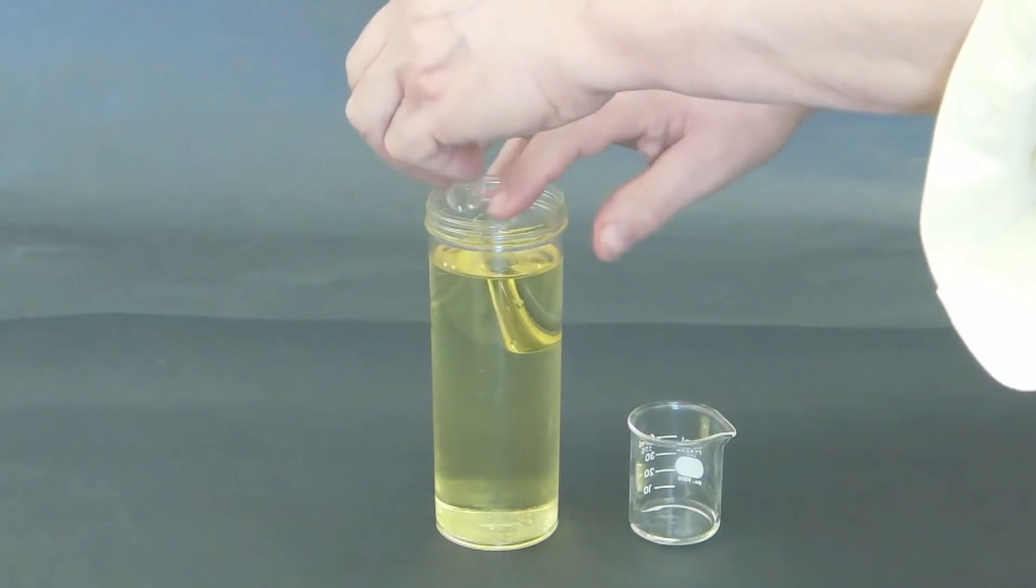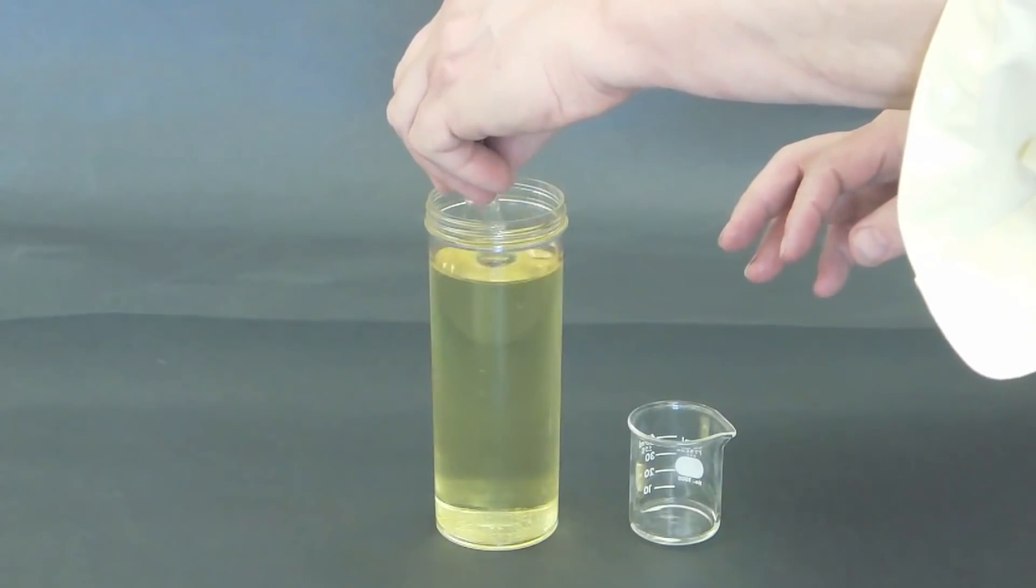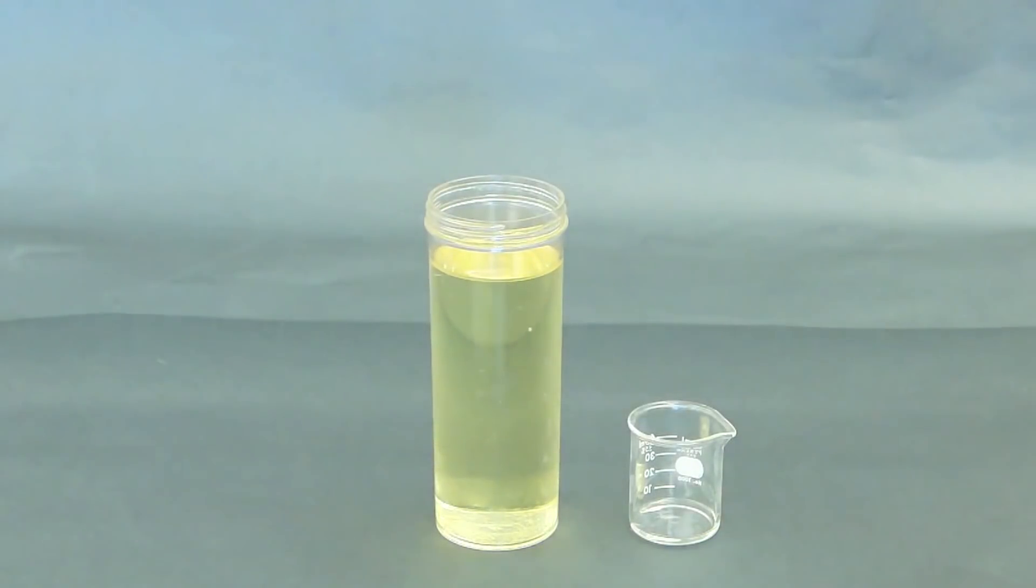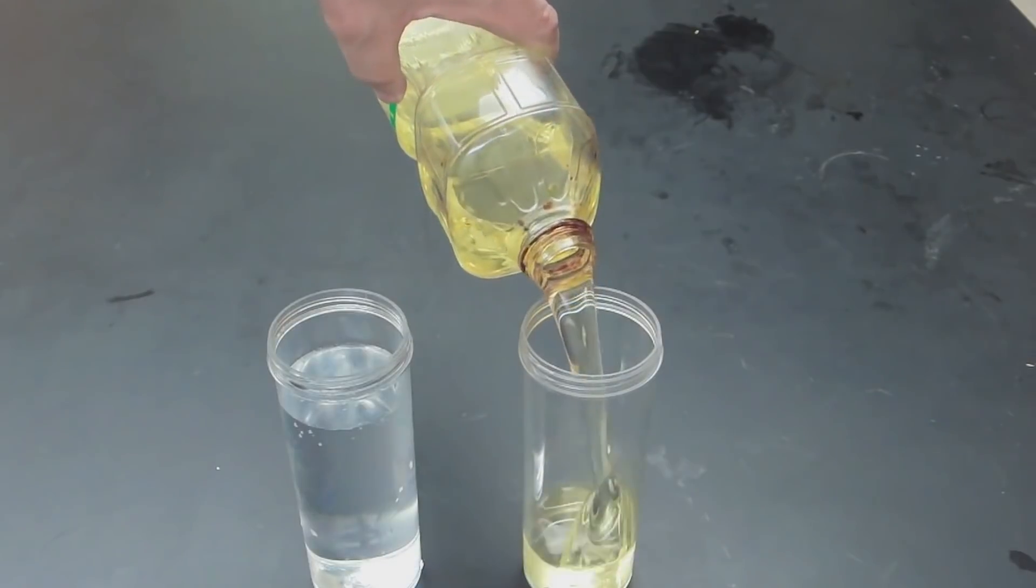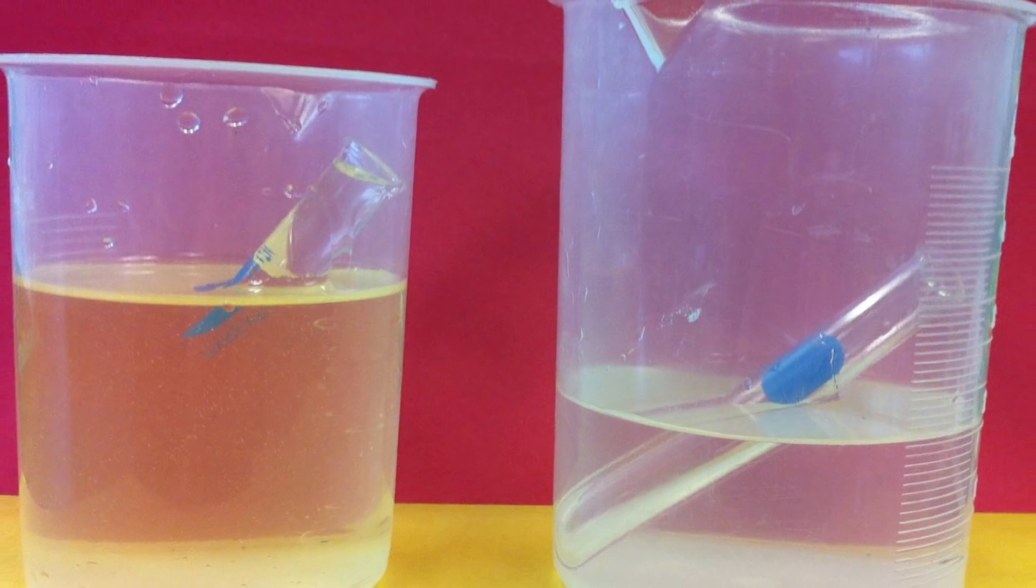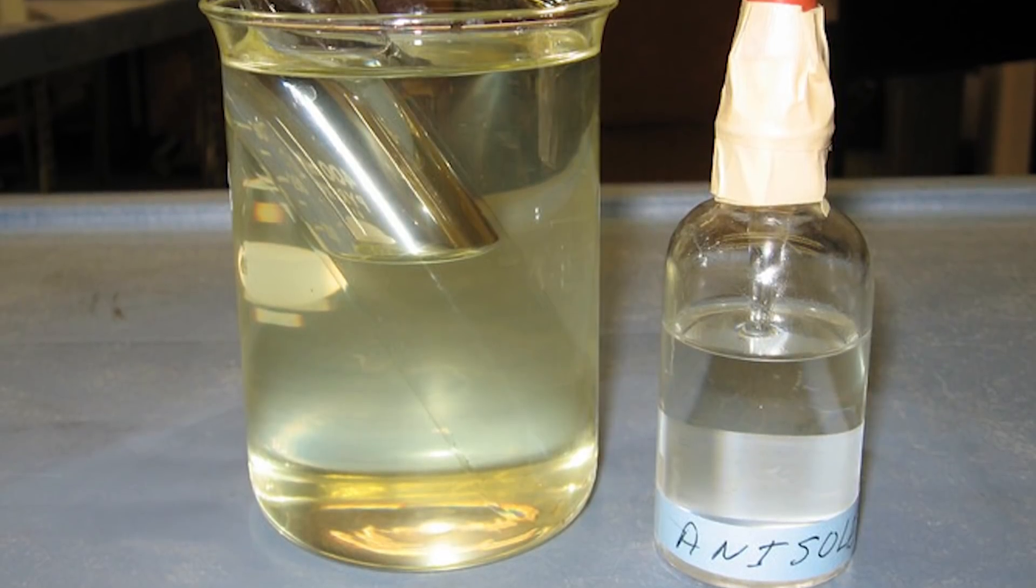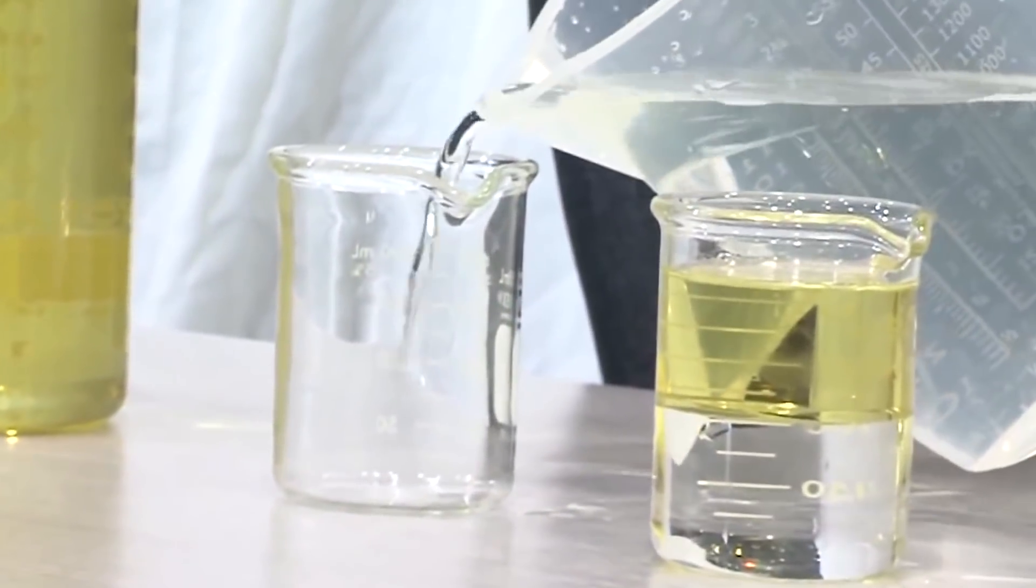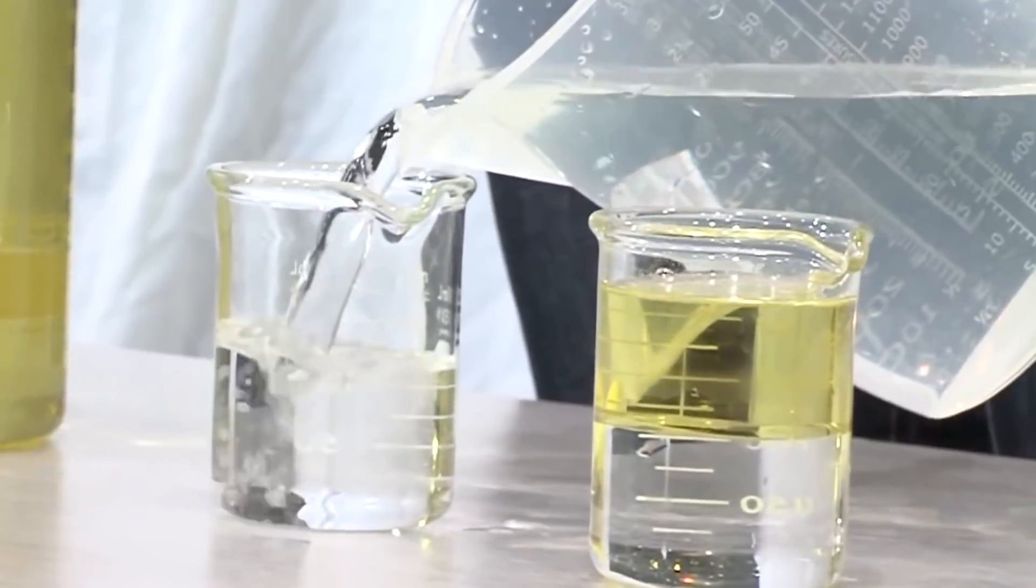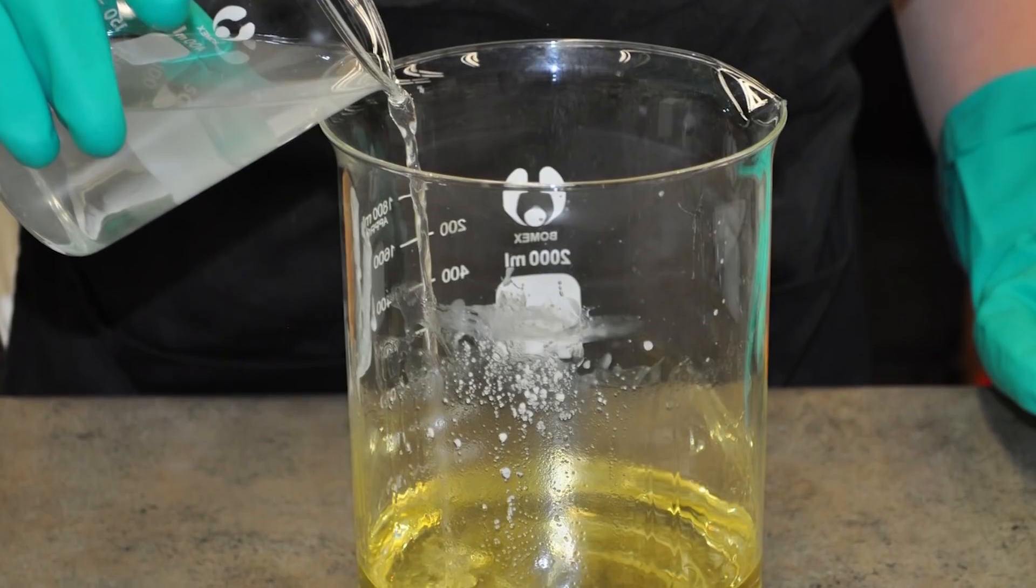Taking a few Pyrex glasses, water, and vegetable oil—vegetable oil and Pyrex have similar refractive properties, making this trick work. Take a Pyrex glass and fill it halfway with water. Once you've done that, you can go ahead and fill the glass up the rest of the way with vegetable oil...